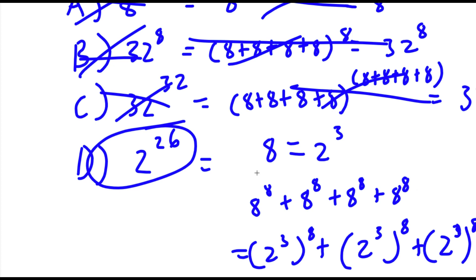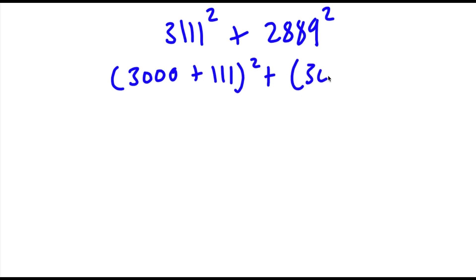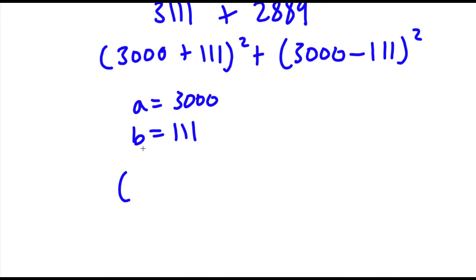Now it's time for our bonus problem: 3,111 squared plus 2,889 squared. The first thing I'm going to do is rewrite this as 3,000 plus 111 squared plus 3,000 minus 111 squared. Now I'm going to set A equal to 3,000 and B equal to 111. So if I substitute these in, I get A plus B squared plus A minus B squared.